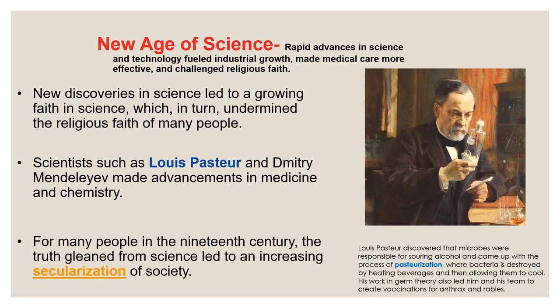For many people in the 19th century, the truth gleaned from science led to an increasing secularization of society — more dependence on science and less on religious faith. Interestingly, many Romantics did like the idea of religious devotion because it evoked emotion. So they would be anti-new-science and against secularizing society because they saw it as too scientific and not emotional enough.